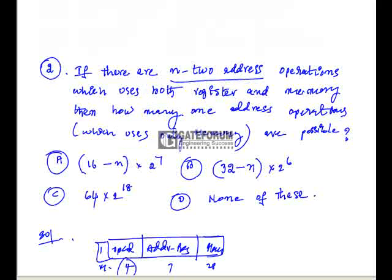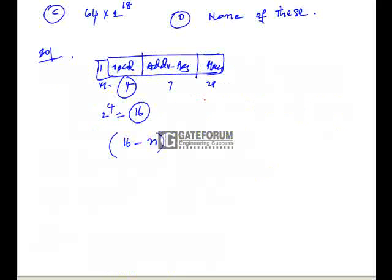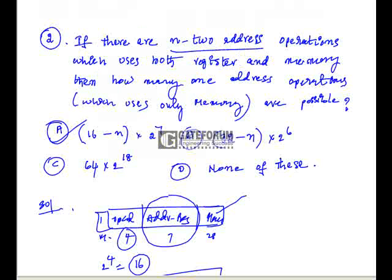That means remaining 16-N, we can make use for the memory address only. So this address part of register also can be taken as opcode, then 2^7 combinations. 16-N into 2^7 combinations. So option A is the right option.